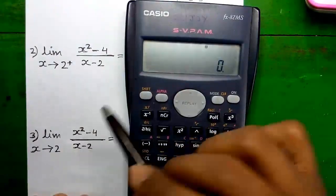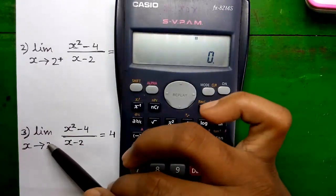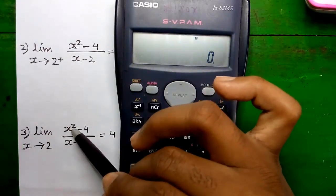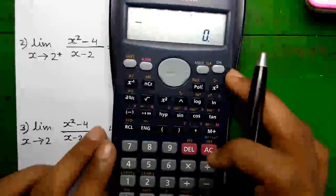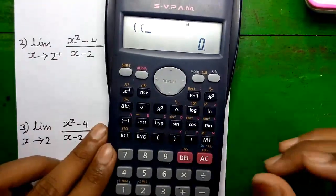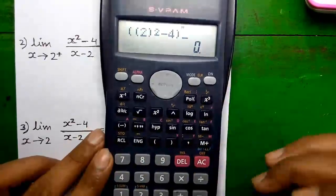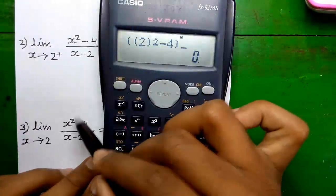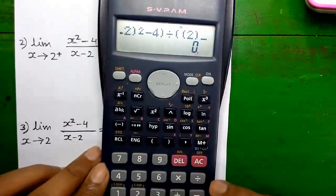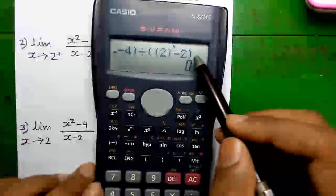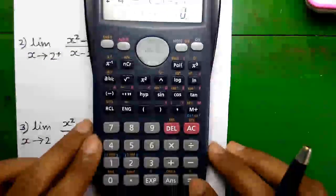We will form this expression on the calculator numerically. At x equals to 2, it will be 2 squared, that is x squared minus 4 divided by 2 minus 2. So let's do it. Left parenthesis, again left parenthesis. This is 2 squared minus 4, parenthesis closed for the numerator, divided by parenthesis 2 minus 2, parenthesis closed for the denominator. Press equals.